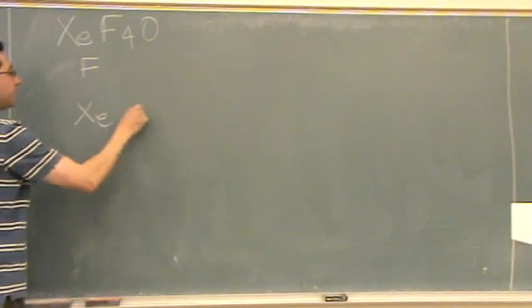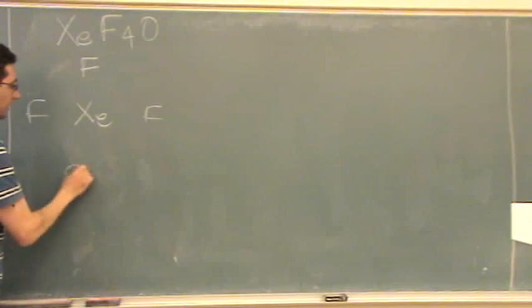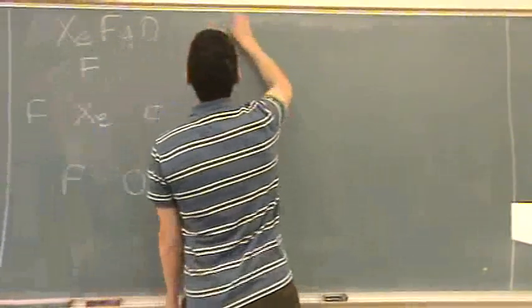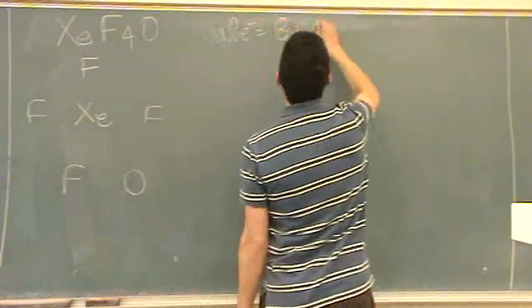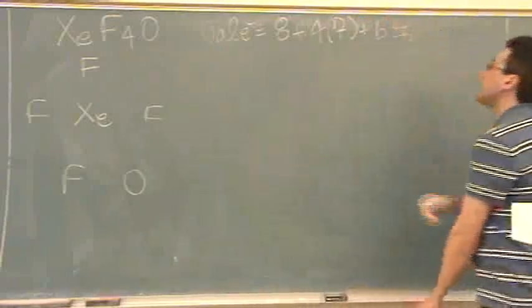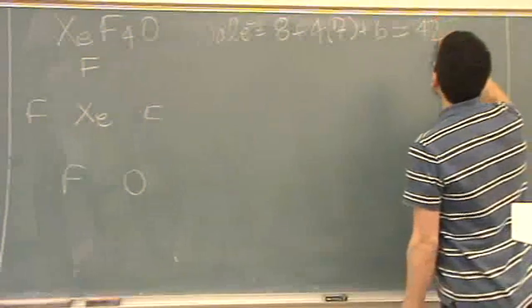Alright, so xenon, F, F, and F. Oh, I almost forgot. I need to get my valence electrons. Xenon is 8, plus 4 fluorines is 7, plus an oxygen is 6, but that's 28 and 14. Is that 42? 42.